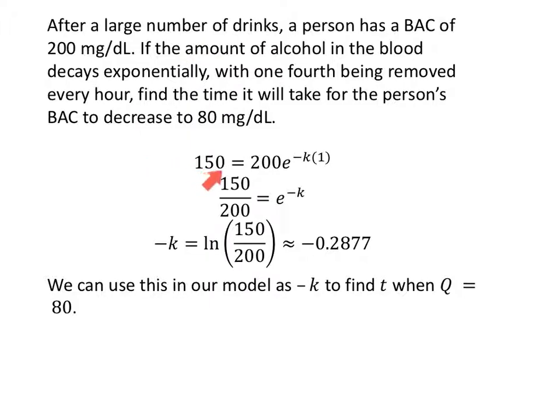If 150 mg/dL remains when we started with 200, then 150 = 200e^(-k·1). Divide both sides by 200: 150/200 = e^(-k). I'm going to leave it as 150/200—my calculator is cool with that. Now that I've isolated the exponential part, I rewrite in logarithmic form: -k = ln(150/200), so -k = -0.2877. We can use this in our model to find the time when the quantity is 80.